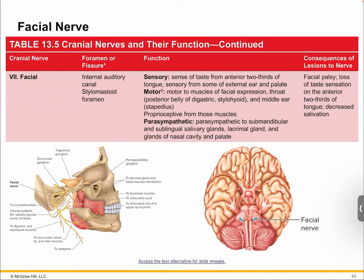Then we get to number seven, the facial — basically shallow face. So a lot of the muscles you learned about in the muscle system on the half head were probably controlled by the facial nerve. All of your expressions are governed by facial nerves.